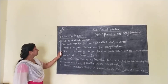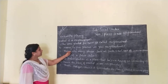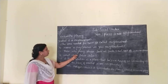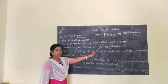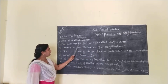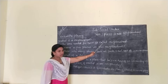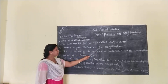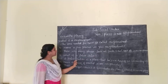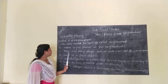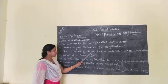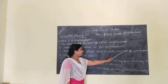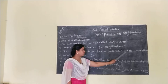Answer the following questions. What is a neighborhood? The area around our home is called a neighborhood. Name a few places in your neighborhood. There are many places such as park, school, bank, etc. in our neighborhood.